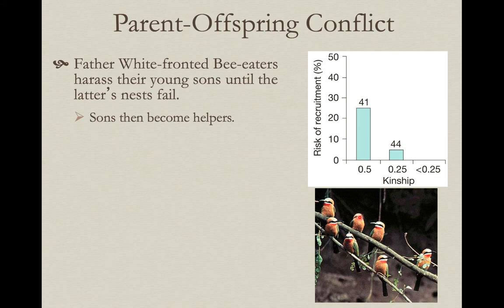Going back to white-fronted bee-eaters: young birds sometimes attempt to nest. It turns out the fathers of some white-fronted bee-eaters will harass their sons — particularly their younger sons — to actually cause their nest to fail. They do this because it increases the chance that their sons will then become helpers at the father's nest, helping raise other brothers and sisters.